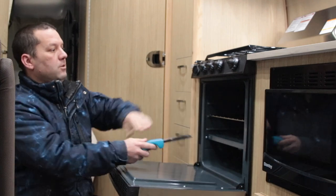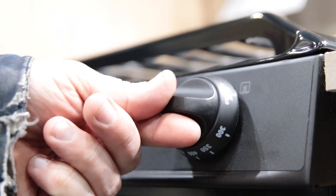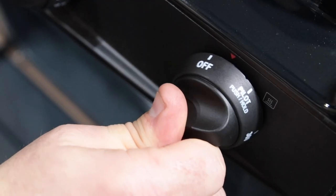Today we're going to show you how to ignite the oven in your Airstream trailer. Use the knob on the right for the oven and push the knob in. Turn it to the pilot setting.